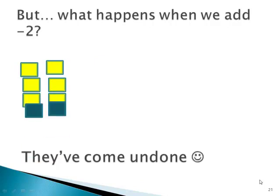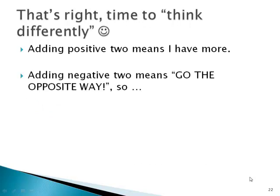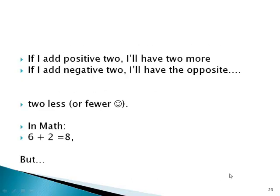But what happens when we add negative 2? They've come undone. That's right. Time to think differently. Adding positive 2 means I have more. Adding negative 2 means go the opposite way. If I have positive 2, I'll have 2 more. Or, if I had negative 2, I'll have the opposite: 2 less or fewer.